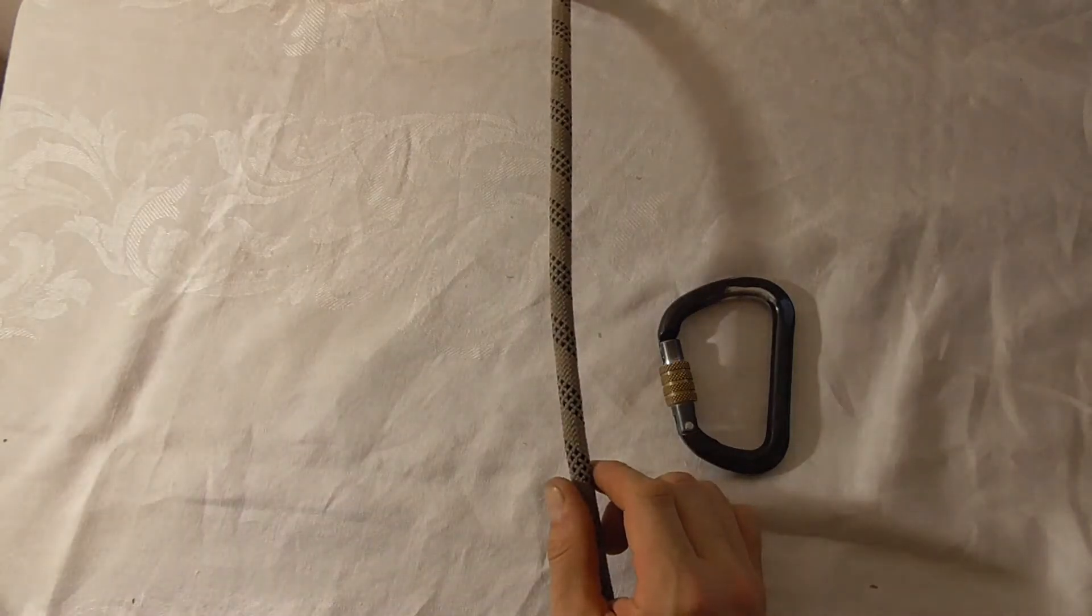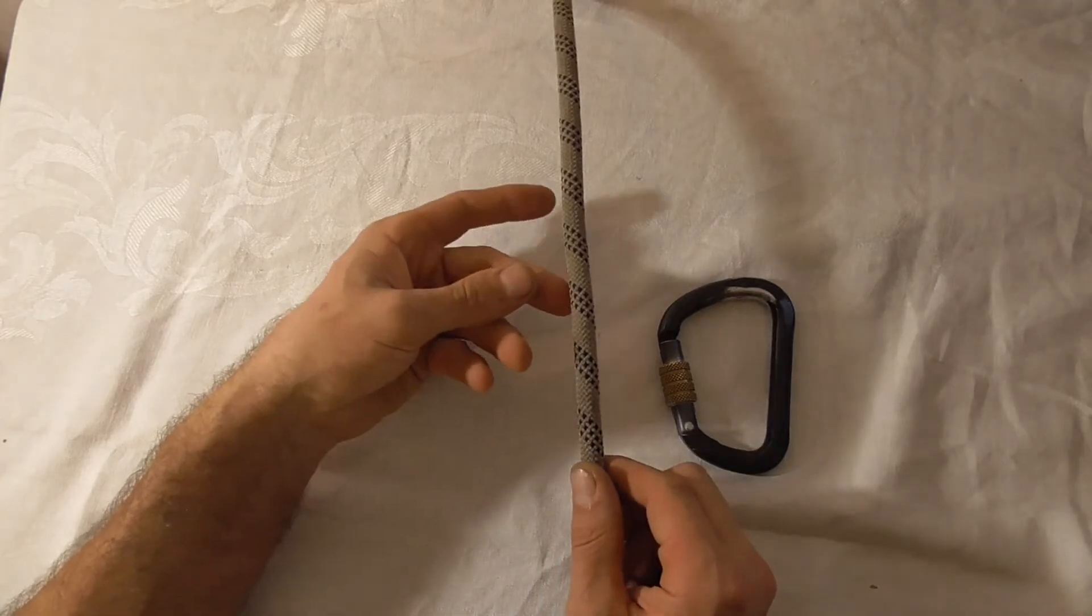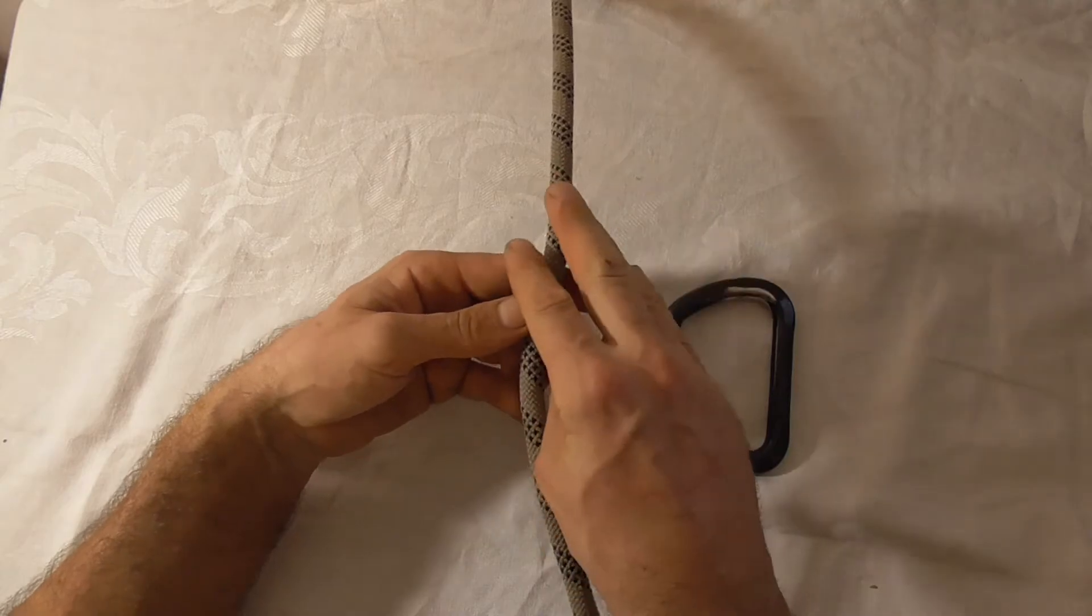Let's have a quick look at the munter hitch. The munter hitch is used sometimes as part of a rappel or belay system, and to tie this we're going